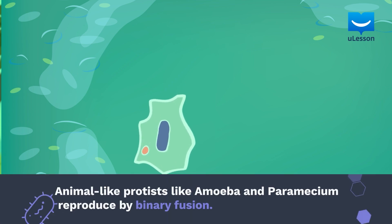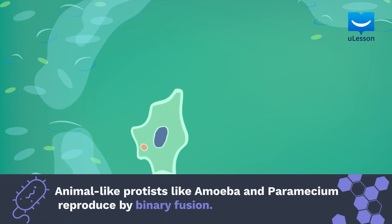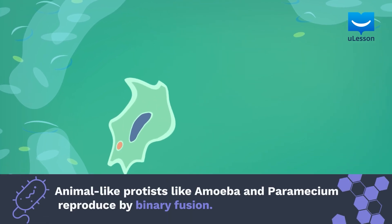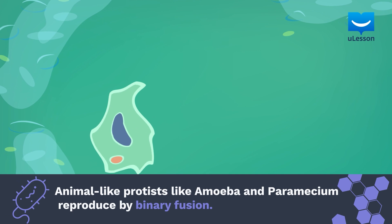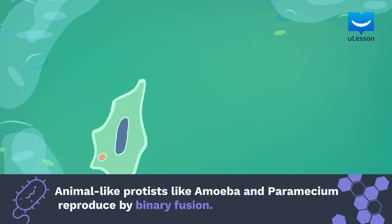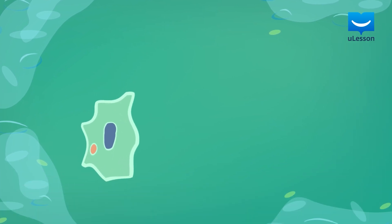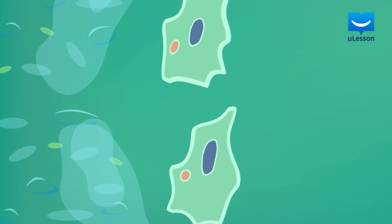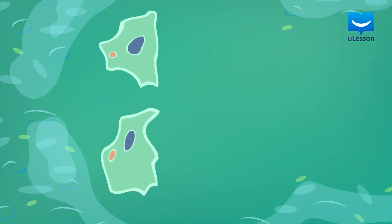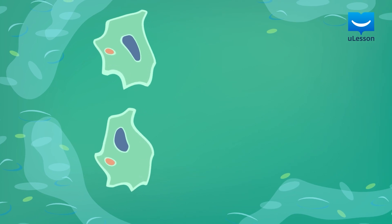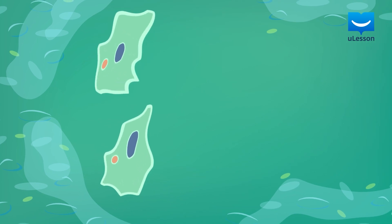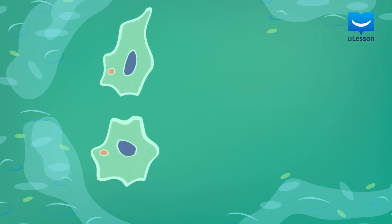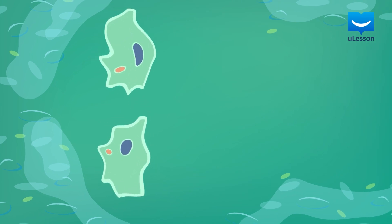Animal-like protists like Amoeba and Paramecium reproduce by binary fission. This involves a parent Amoeba or Paramecium dividing or splitting to produce two identical daughter cells.